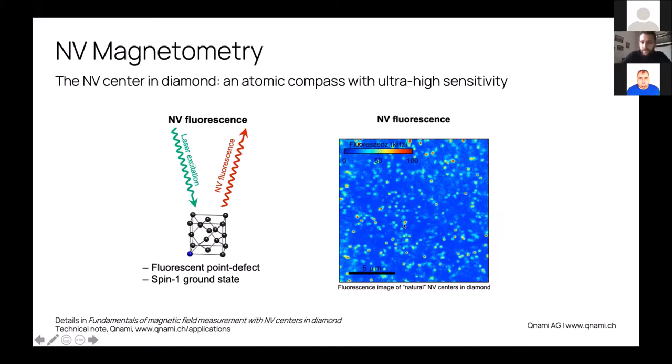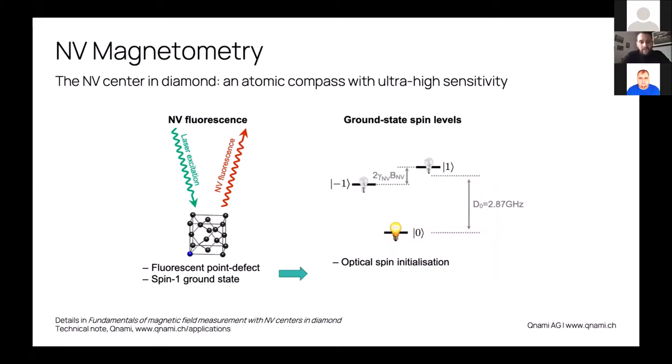This is what you see on this image on the right, where every spot here corresponds to one individual NV center. The second and probably even more important characteristic is that it carries a spin. The NV center localizes one spin, which is a spin-1 in the ground state. If we look at this ground state, we have three states: zero, minus one, and plus one. When you shine this green light, you automatically initialize your system in this base zero state. The second thing is that this zero state is a lot more bright than the other two.